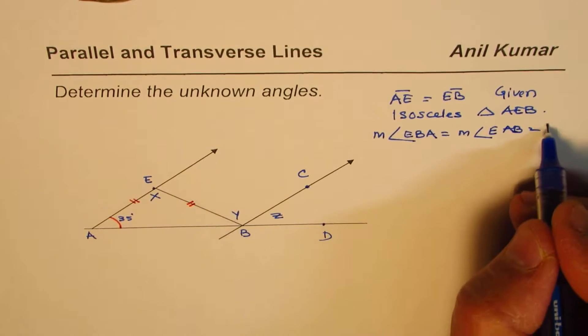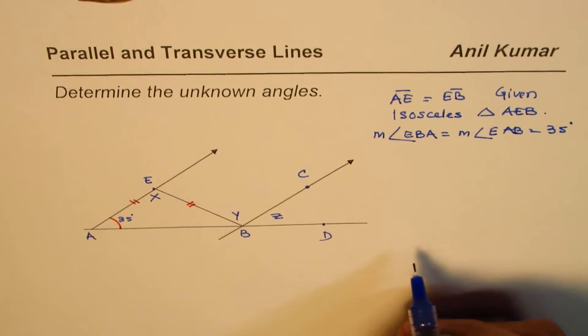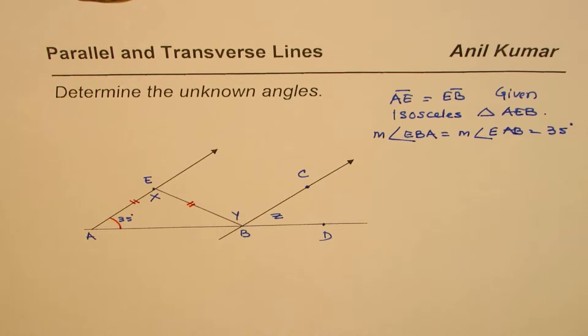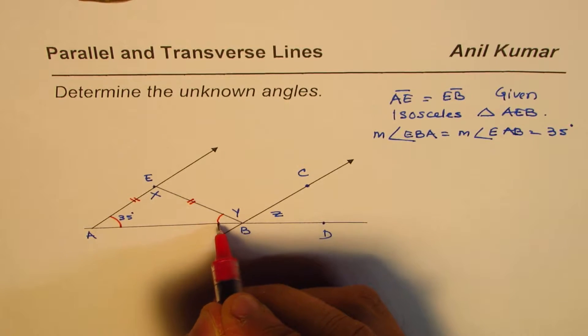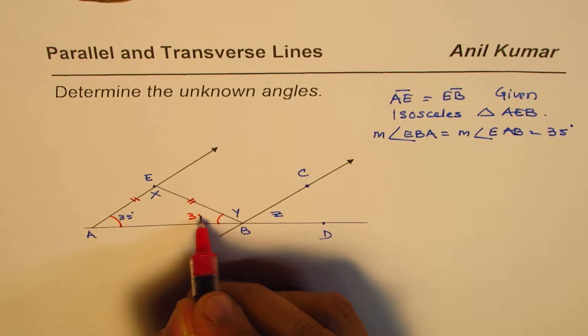And EAB is given to us as 35 degrees, so that is 35 degrees. So with that we find this angle to be 35 degrees.